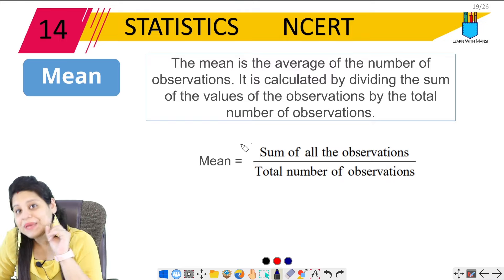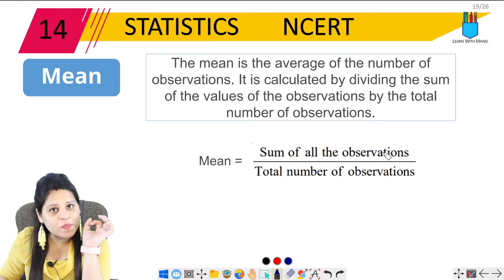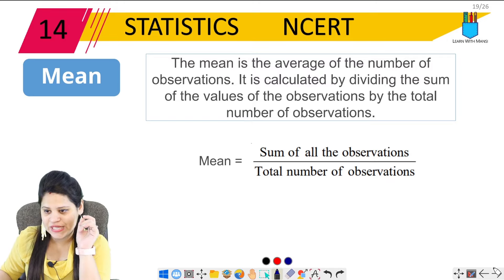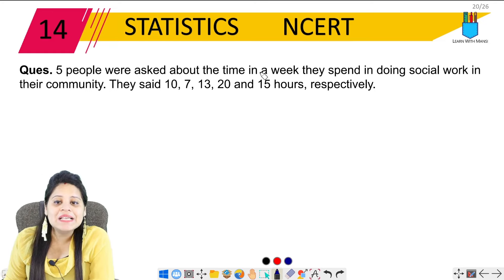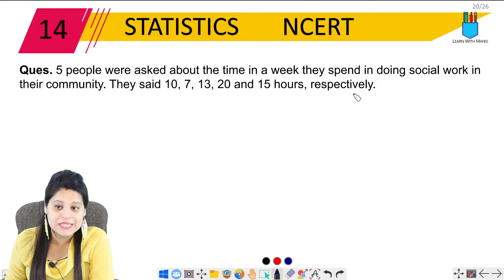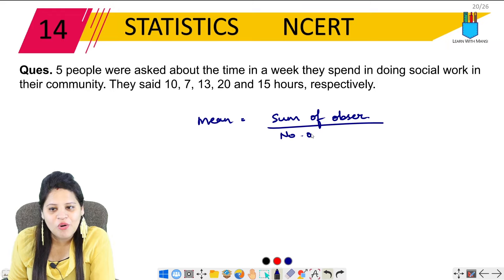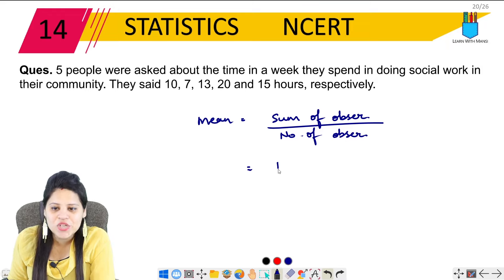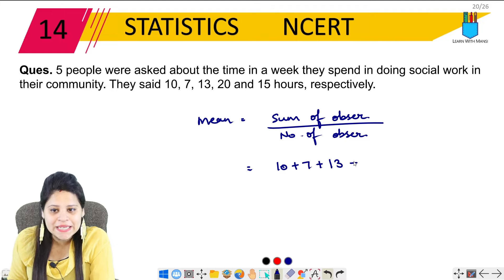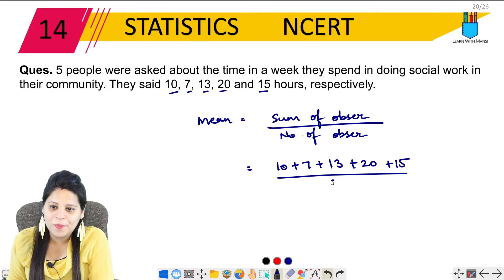What is the mean? The mean is the average of the number of observations. It is calculated by dividing the sum of the values of the observation by the total number of observations. Now what happens here? Basically we have an average of data. For example, we have a class market. So when we have the mean, we will have an idea that this is the average.